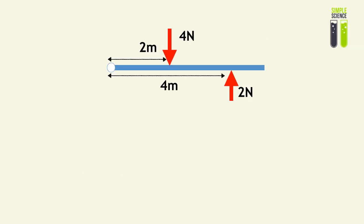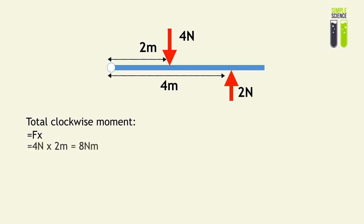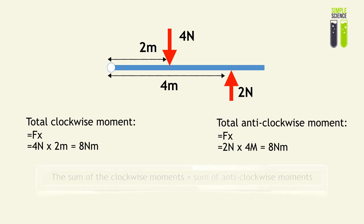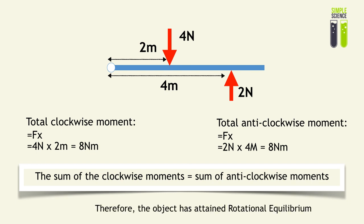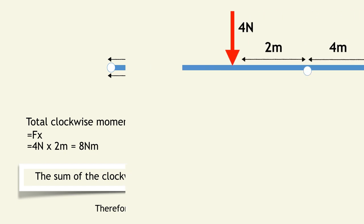Now looking at an example, the total clockwise moment of the force 4 newtons is 4 newtons times 2 meters, which gives you 8 newton meters. And the anti-clockwise moment is also equal to 8 newton meters. Therefore, the sum of the clockwise moments is equal to the sum of the anti-clockwise moments, and this object has attained rotational equilibrium.